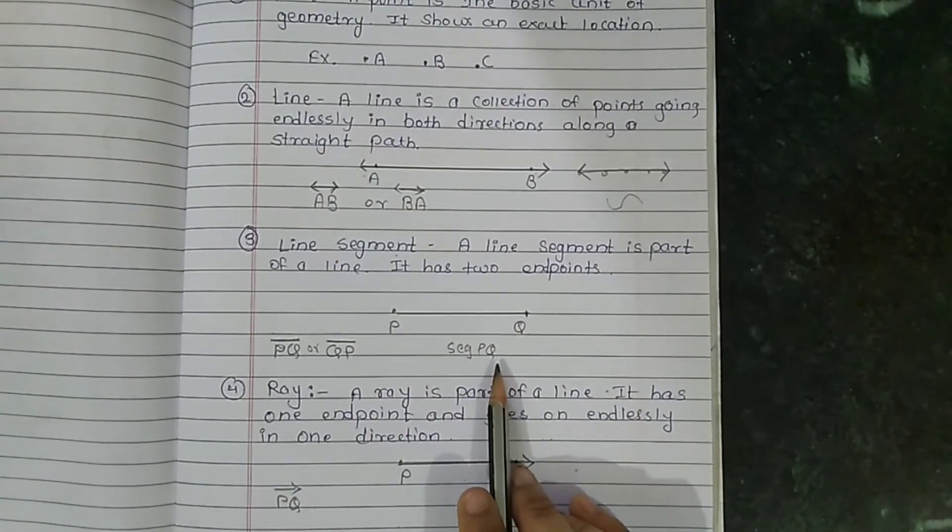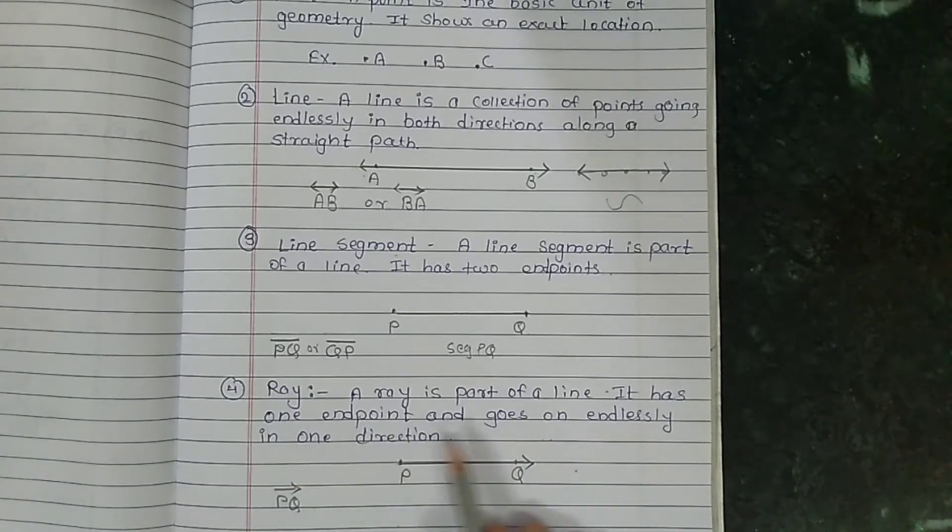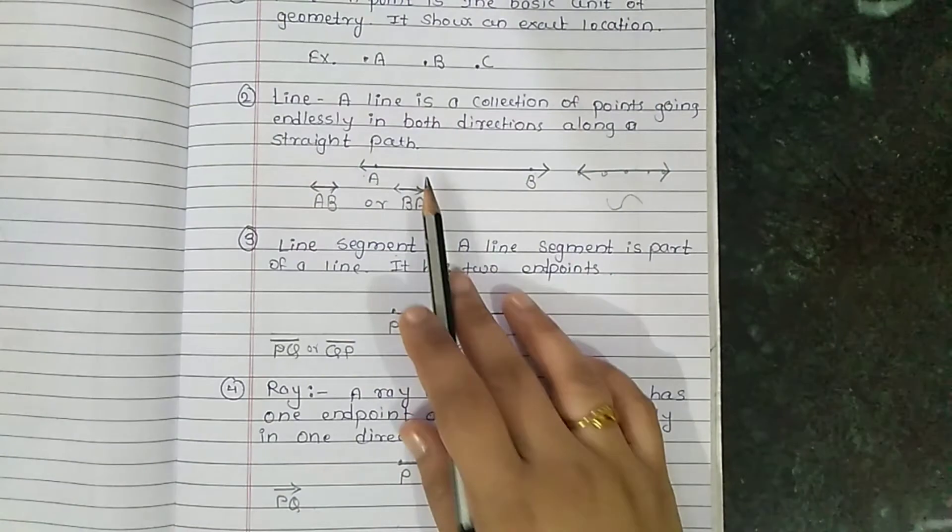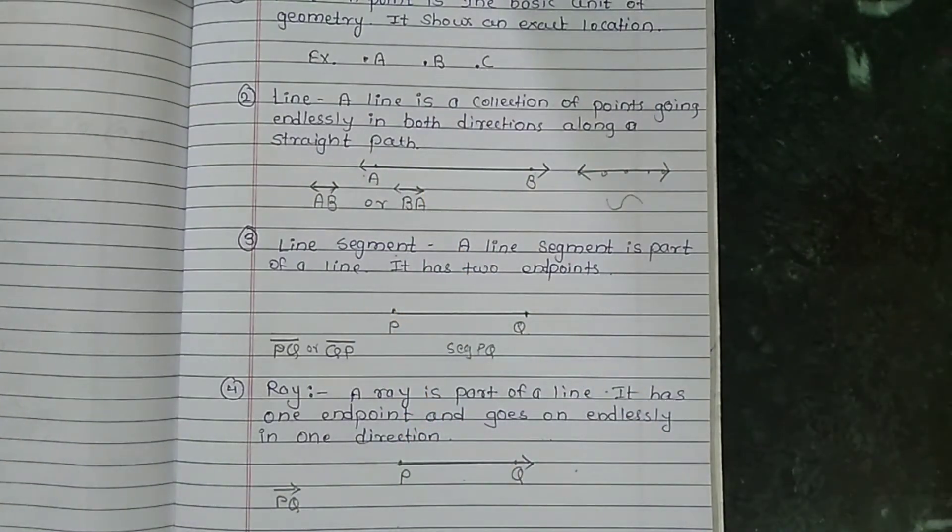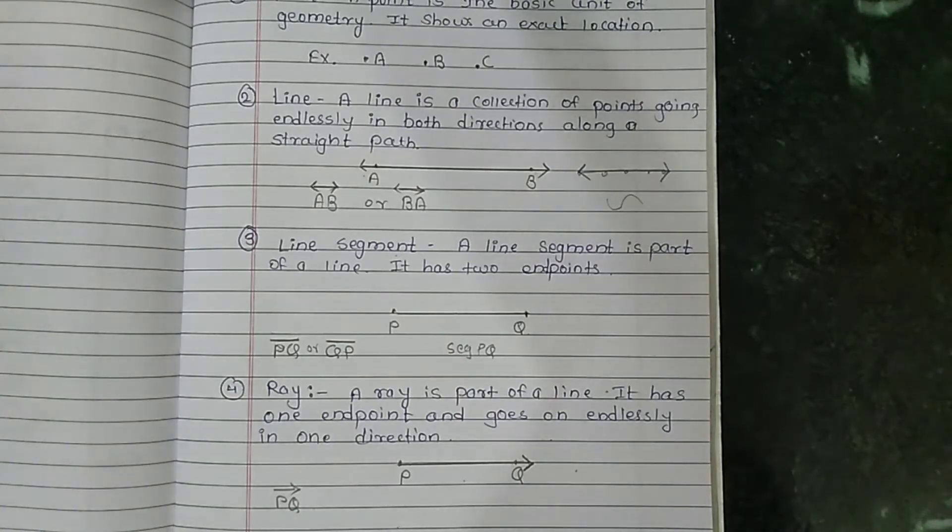Ray. A ray is part of a line. It has one end point and goes on endlessly in what direction? If you see the line, in both directions it extends, but the ray is in one direction. This is why this arrow is here. Like sun rays or torch light starts from one point and you know the light goes far away.